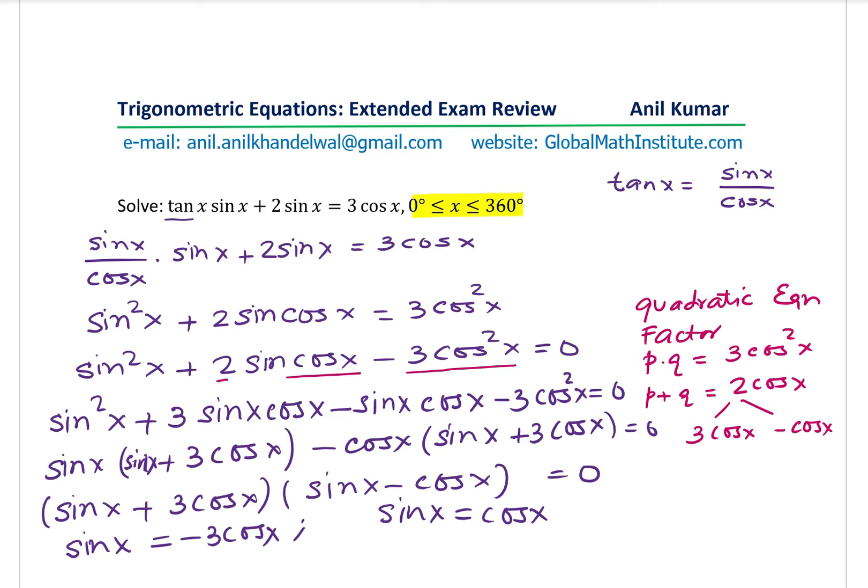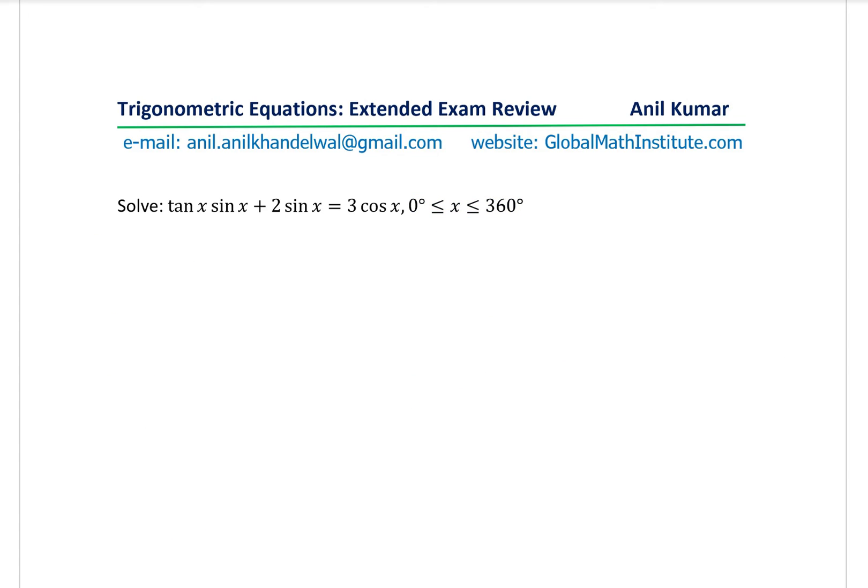So we'll take it to the next page and continue with the solution. So we actually wrote this equation in the factored form. So we get sin x plus 3 cos x times sin x minus cos x equals to 0. So this means that tan x equals to minus 3, and that means that tan x equals to 1. So we have to work in this domain from 0 to 360 degrees. So let's look into the scenario.